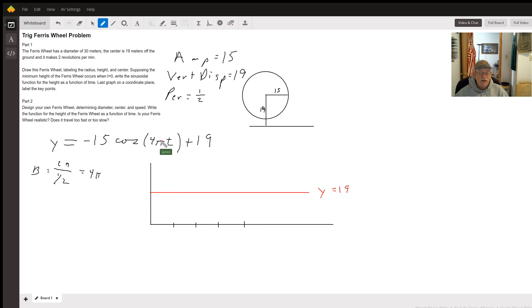So at time zero, we will be down here, this will be four, because we're going to get negative 15, cosine of zero is one, so we get negative 15 plus 19. So we're going to start down here at zero, four.